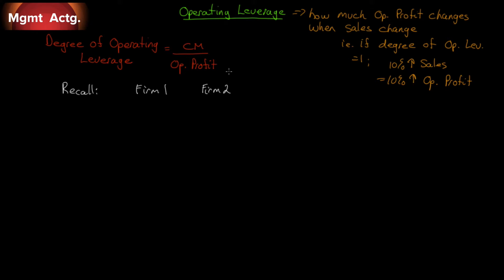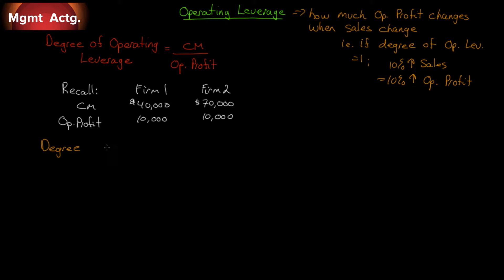The contribution margin for Firm 1 was $40,000 — high variable costs. For Firm 2, it was $70,000 — low variable costs. So the degree of operating leverage for Firm 1 is $40,000 divided by $10,000, which equals 4. For Firm 2, it's $70,000 divided by $10,000, which equals 7.